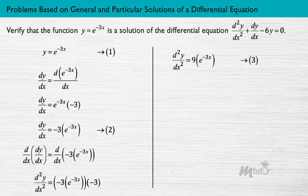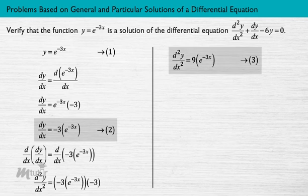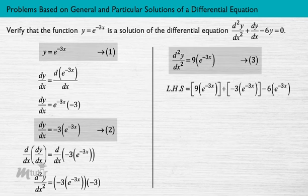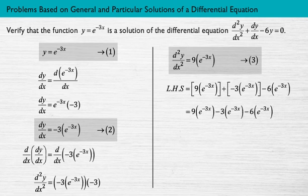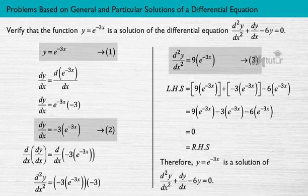On substituting the values of the first derivative, second derivative, and y in the left-hand side of the given differential equation, and simplifying, we can see that the left-hand side of the equation is equal to the right-hand side. Therefore, the function y = e^(−3x) is a solution of the given differential equation.